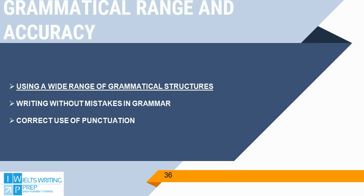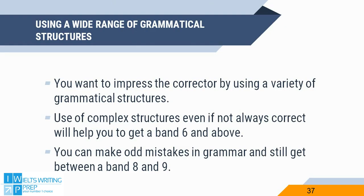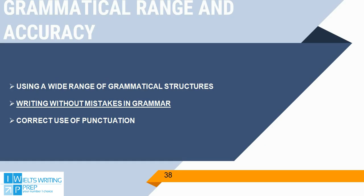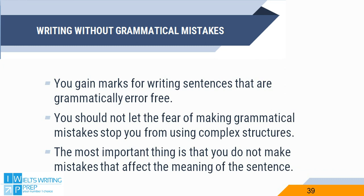Then we have grammatical range and accuracy, which is more or less the same as lexical resource. We want to impress the corrector by using a variety of grammatical structures and complex structures. Even if these structures are not entirely correct, they will help you get above a band 6. You can make the odd grammar mistake and still get between an 8 and a 9. Some students worry so much about making grammatical mistakes that they make all their structures simple, and it's not possible to get over a band 6 for grammatical range and accuracy that way. Accuracy is important, but you shouldn't let it get in the way of using a range of grammatical structures.